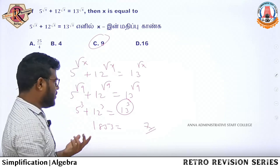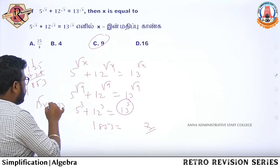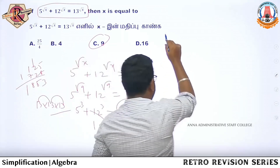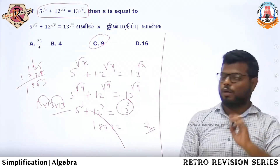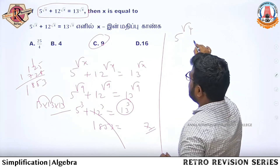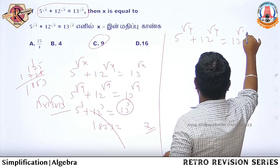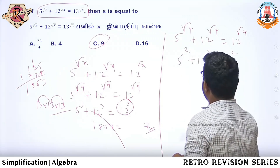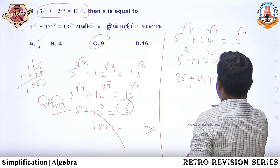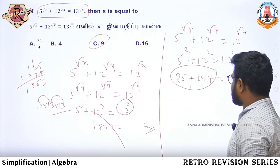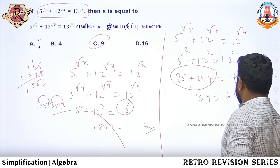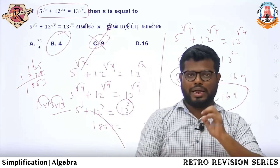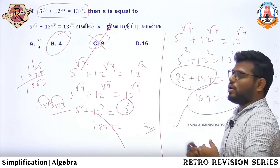Right or wrong? 13 into 13 into 13 — that is not our answer. So option A is not our answer. Now check option B: 5 to the root power 4 plus 12 to the root power 4 equals 13 to the root power 4. Finally, question number 2 answer is option B, x = 4.